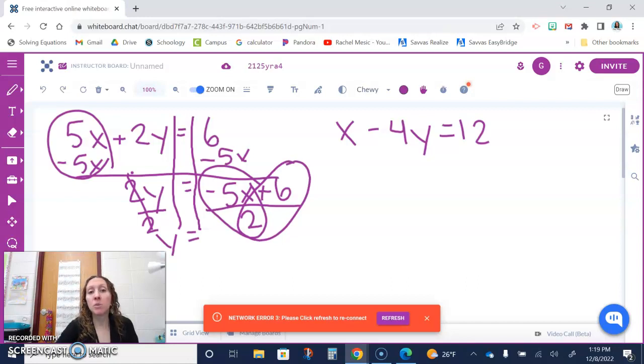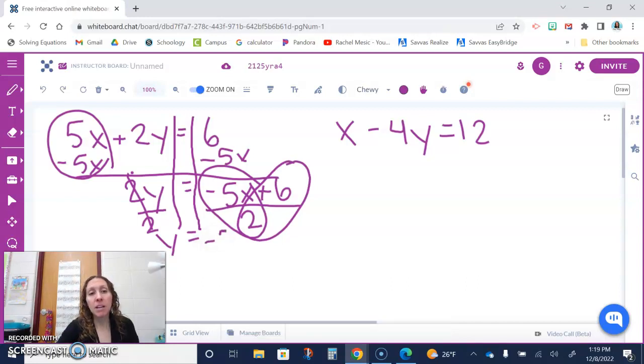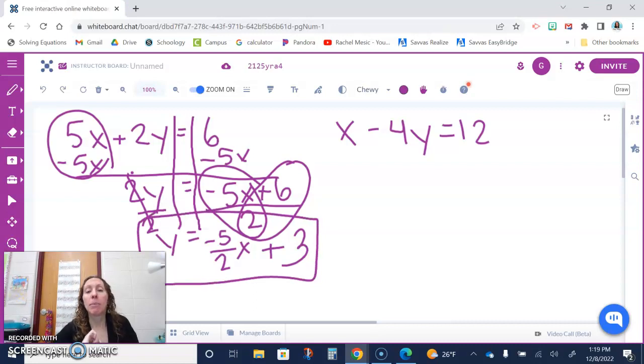So negative 5 divided by 2, we're going to keep that as a fraction: negative 5 over 2x, and then 6 divided by 2 is 3, so plus 3. So y equals negative 5 halves x plus 3.